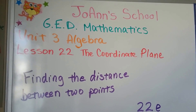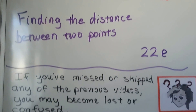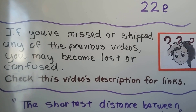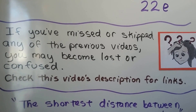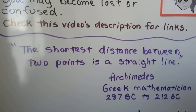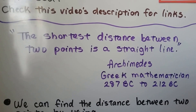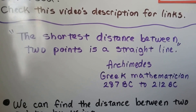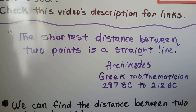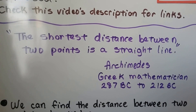Finding the distance between two points, Lesson 22e. Remember, there are links in the description to help you. Have you ever heard the saying, the shortest distance between two points is a straight line? That was said by Archimedes, and he's considered probably the greatest mathematician of ancient times.